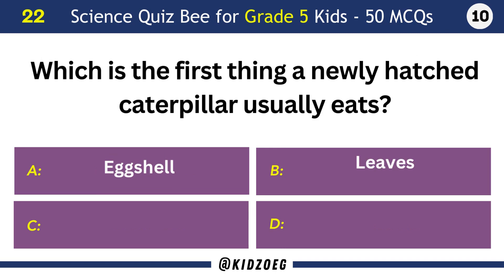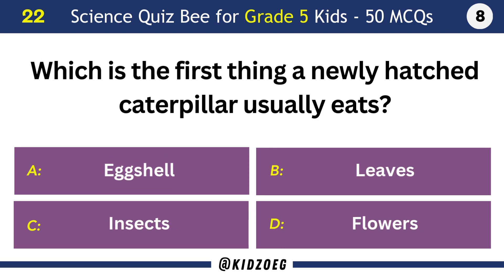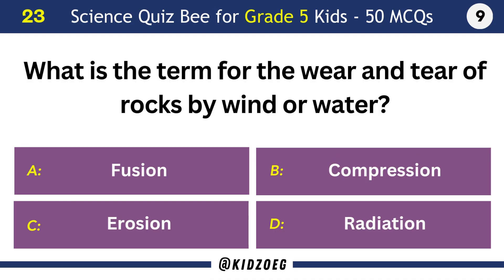Which is the first thing a newly hatched caterpillar usually eats? Its eggshell. What is the term for the wear and tear of rocks by wind or water? Erosion.